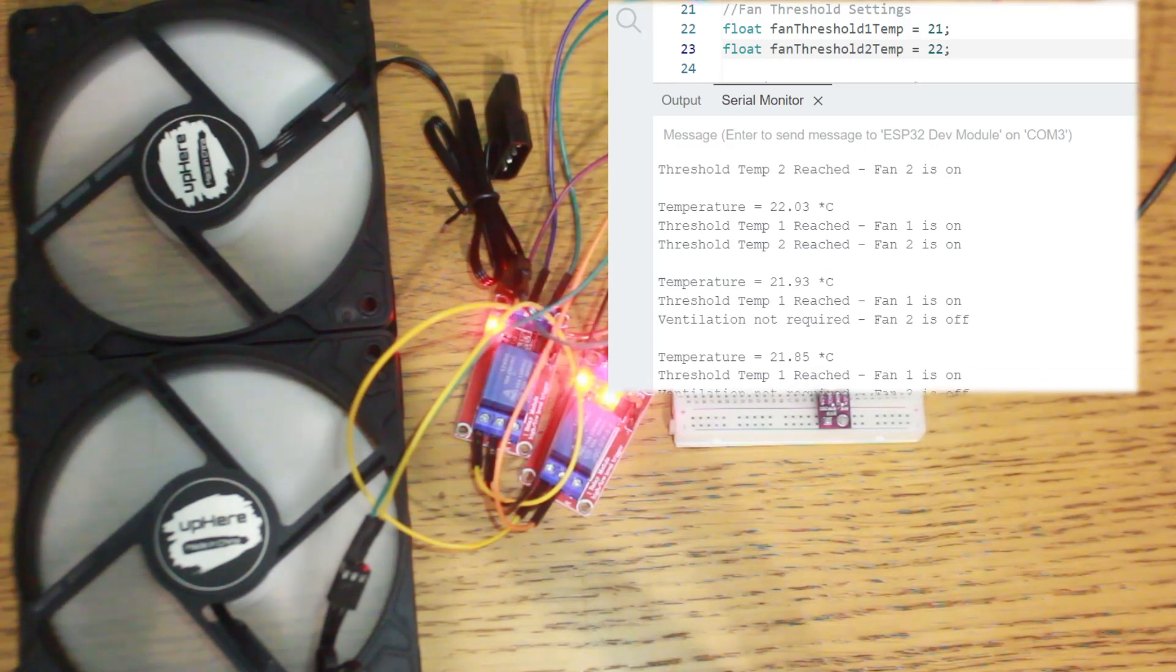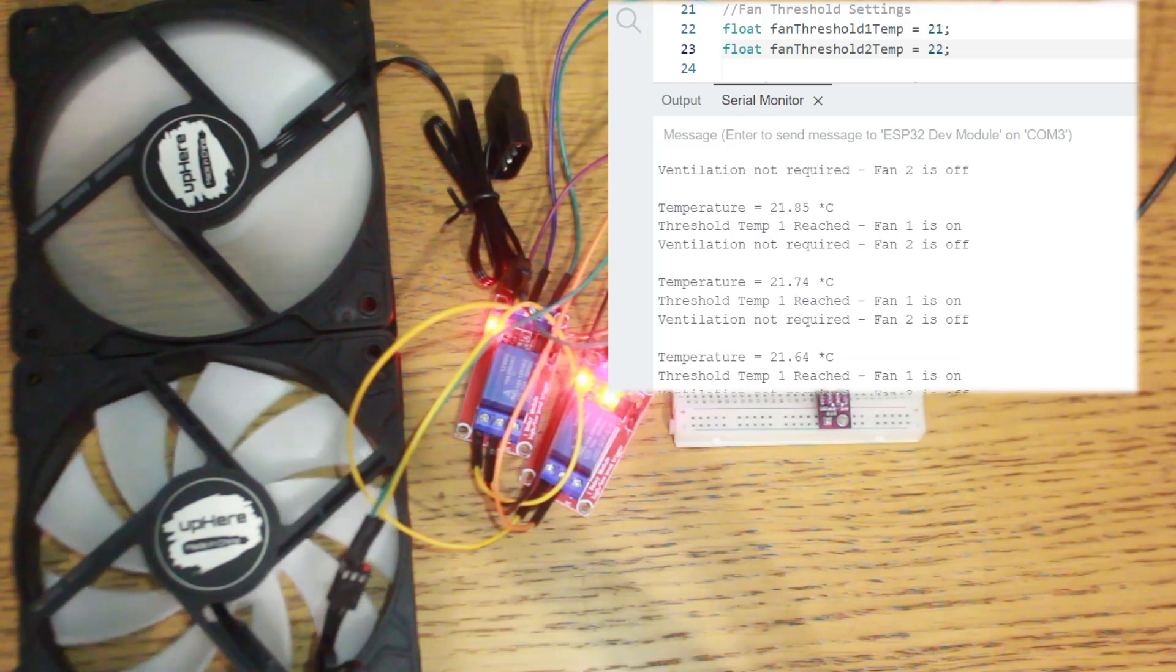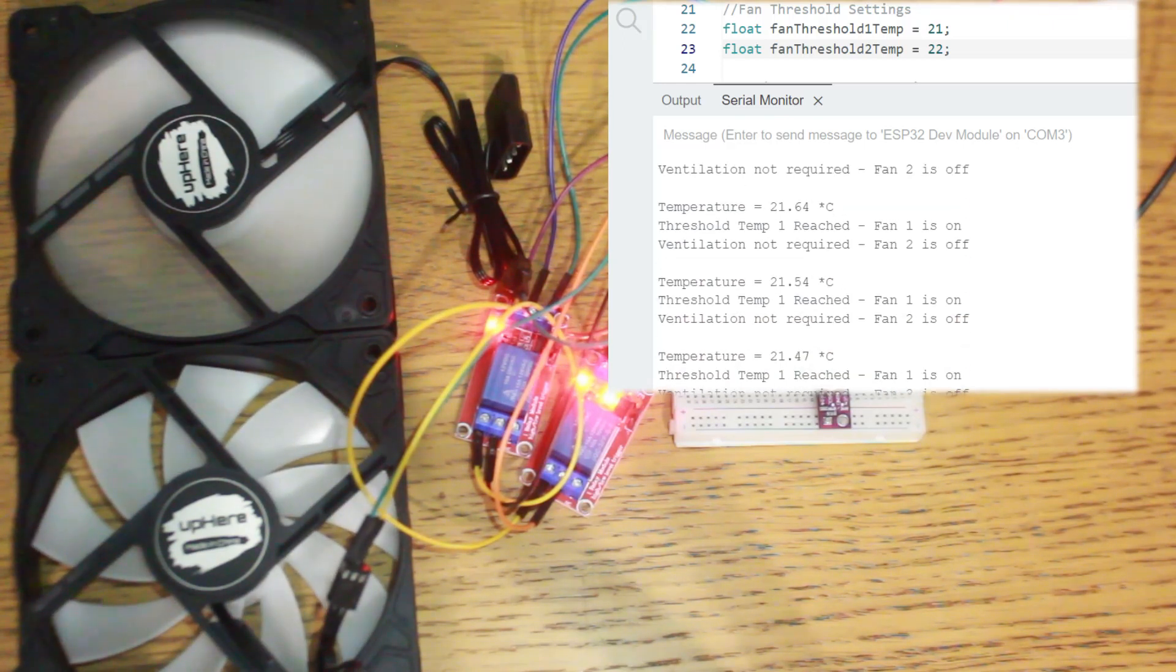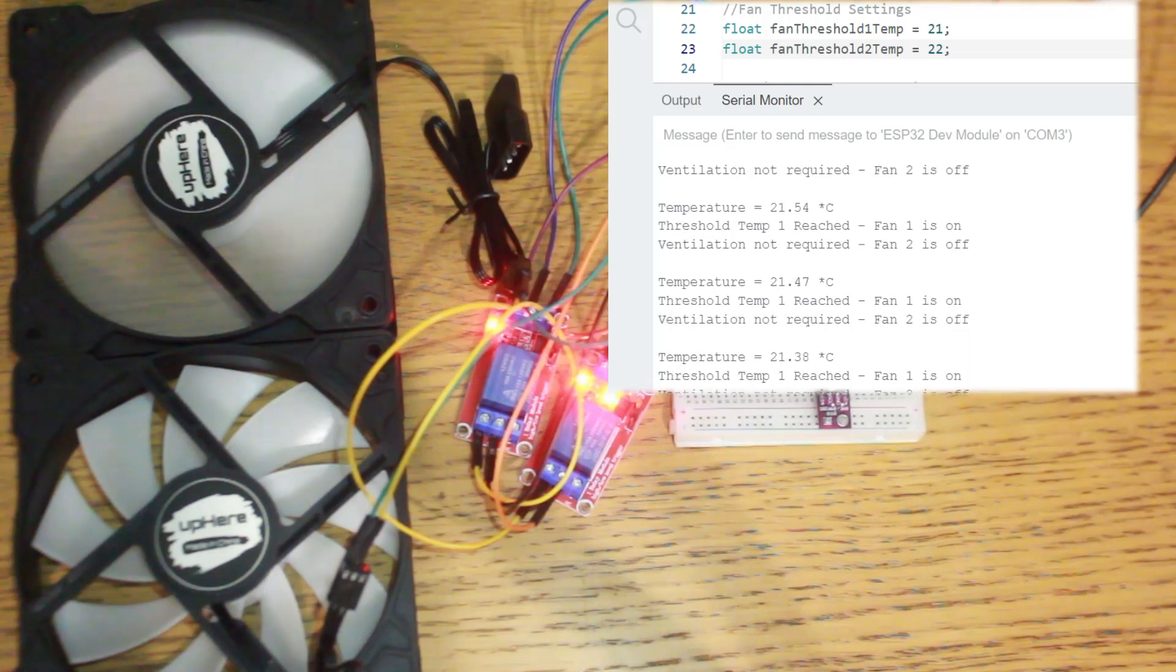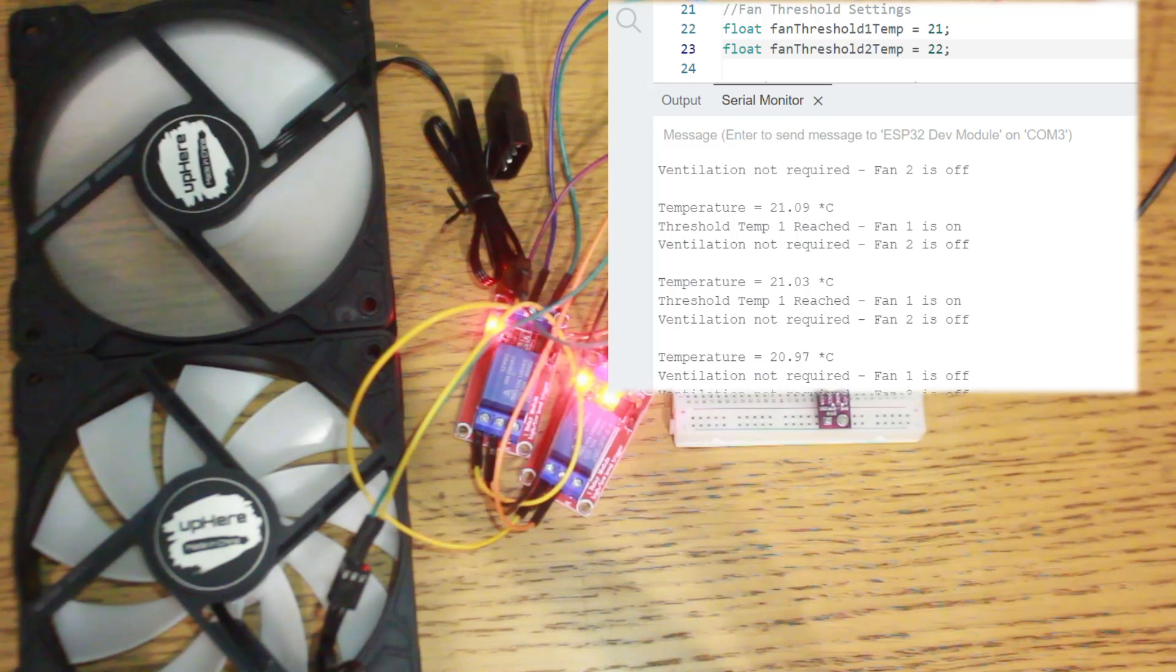The first fan is switched off as it comes below the second threshold and then eventually it will continue to go down until it comes under the first threshold where the signal will be sent to the relay to turn it off again. Yep, there we go.